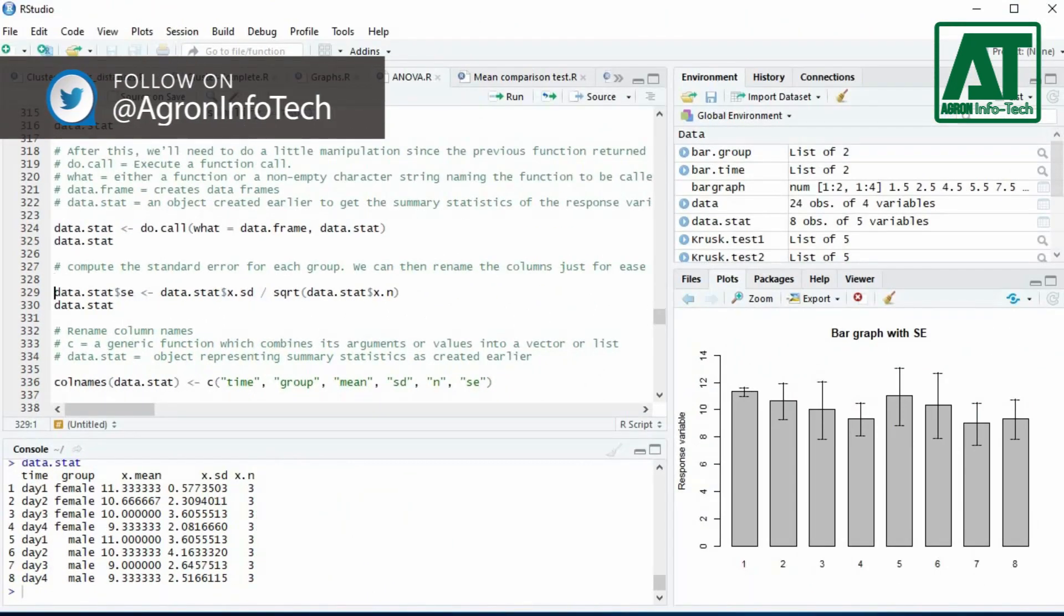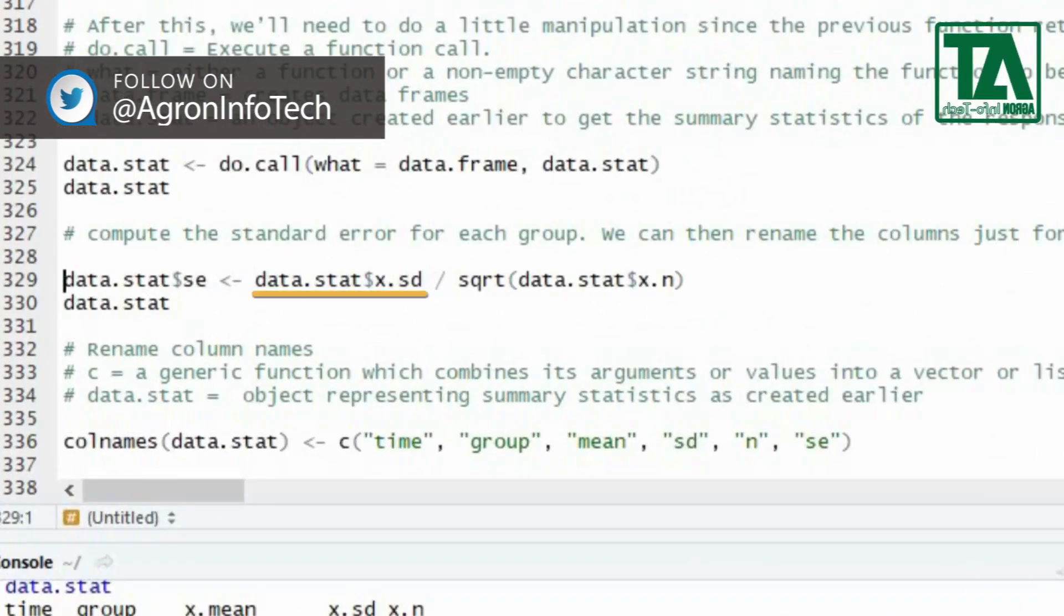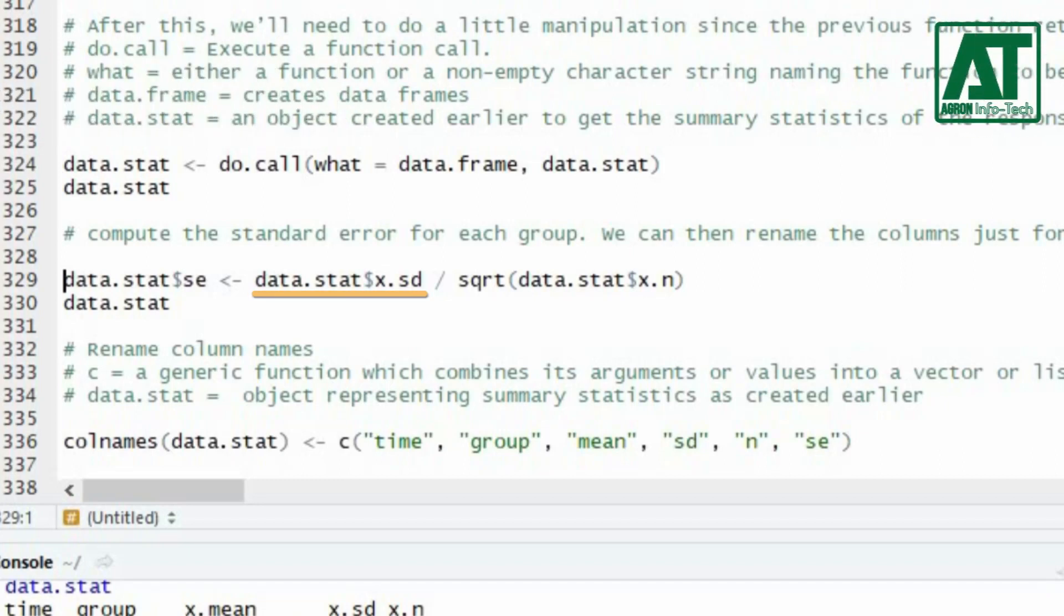Now compute the standard error for each group. Attach the standard deviation component from previous object data.stat. Divide with square root of number of observations to get the standard error.